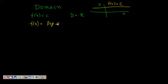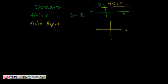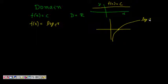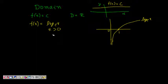Next, we have f(x) = log x to the base e. This function looks something like this — approaching minus infinity near zero — and log x to base e is defined for all x greater than 0.